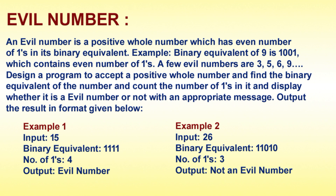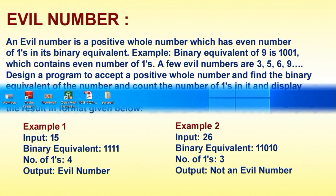Display whether it is an evil number or not with an appropriate message. Output the result in the format given below. Example one: input 15, binary equivalent 1111, number of ones are four, output: evil number. Example two: input 26, binary equivalent 11010, number of ones are three, output: not an evil number.